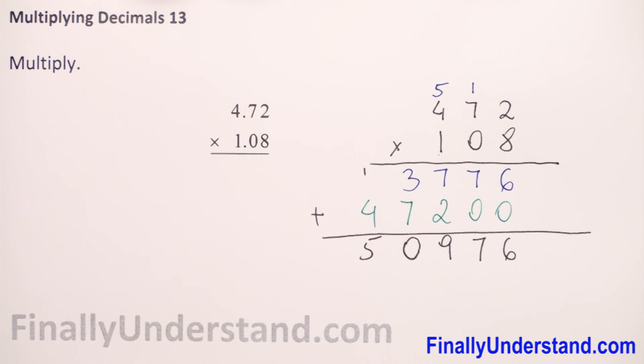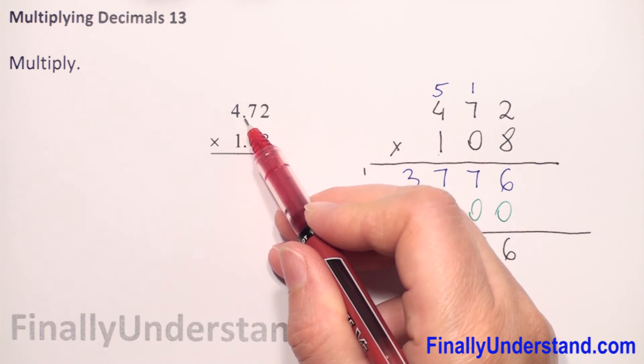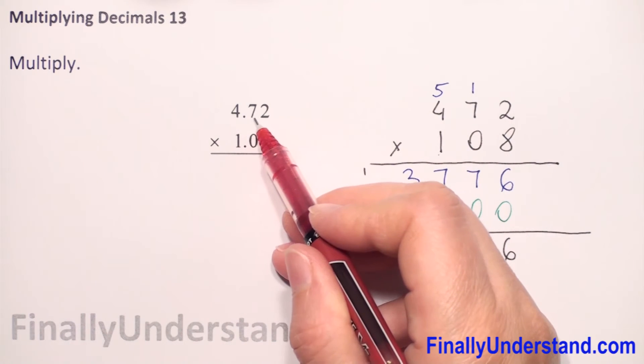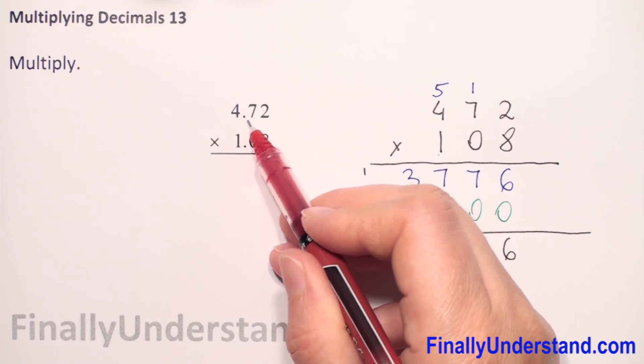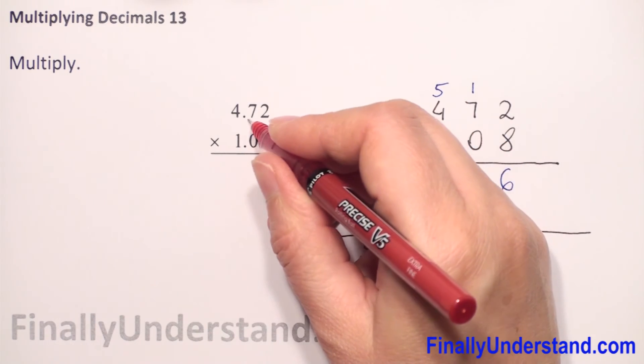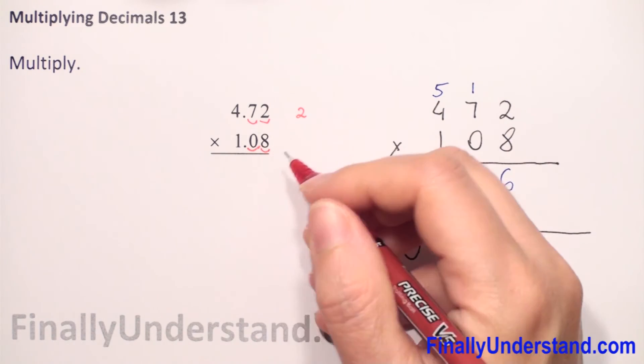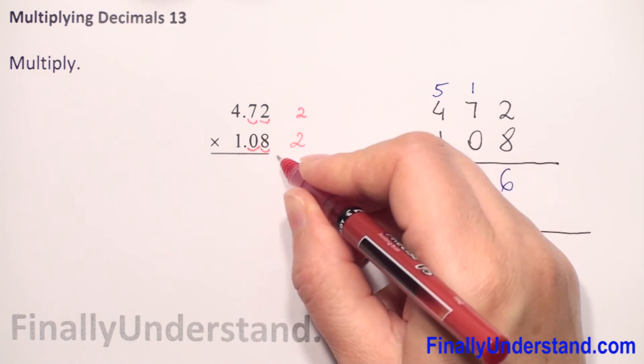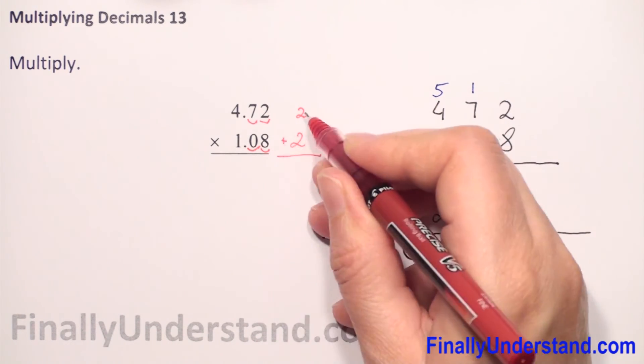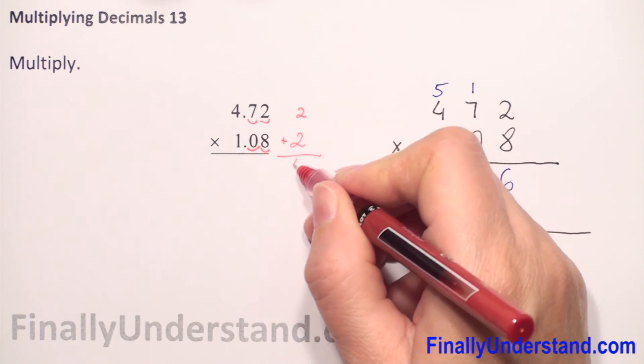And next because we have decimal numbers to multiply we cannot forget about decimal places. In the first decimal number, we have 2 digits after decimal point. In the second we have 2 decimal numbers. We have to add decimal numbers. 2 plus 2 is 4.